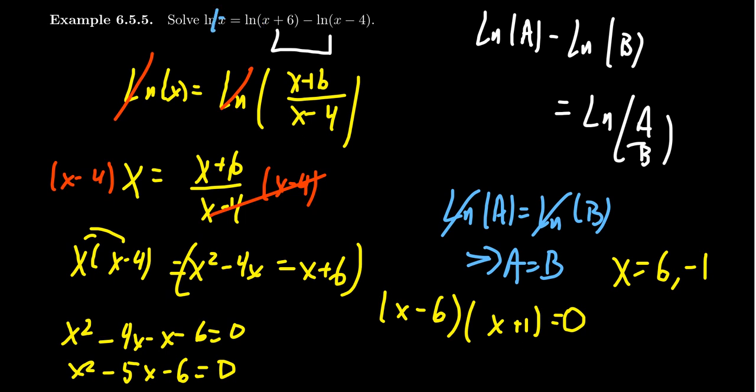If we stick in negative 1, though, you see on the left-hand side we already have a problem. Natural log of negative 1 is not a real number. We'd get negative 1 plus 6, that's 5, that's okay. But then you get negative 1 minus 4, which is negative 5. So there are domain issues. We're going to have to throw out negative 1 from consideration. The solution to this logarithmic equation is going to be 6.